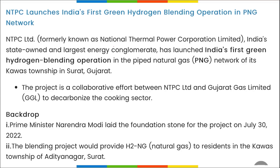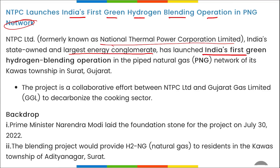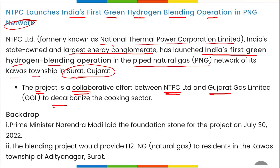NTPC — National Thermal Power Corporation — has launched India's first green hydrogen blending operation in the PNG network. NTPC, which is India's state-owned and largest energy company, launched this in the piped natural gas network of the KUAS township in Surat, Gujarat. This is a collaborative effort between NTPC and Gujarat Gas Limited to decarbonize the cooking sector.